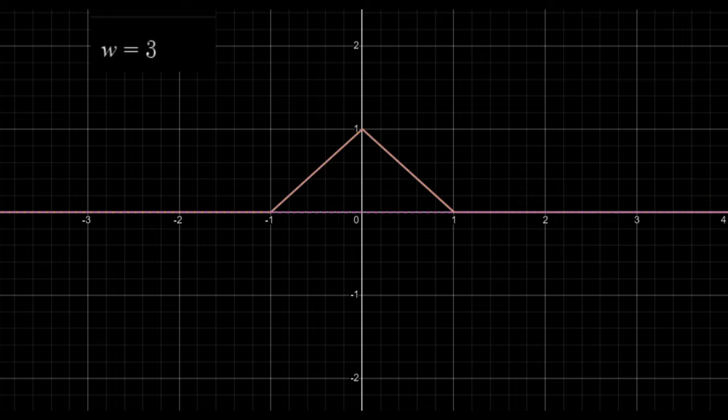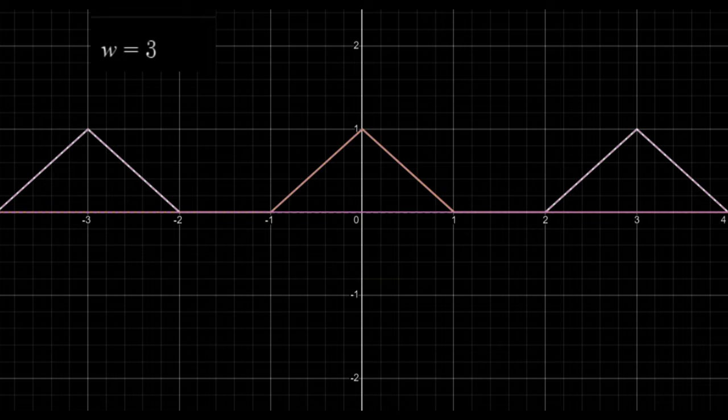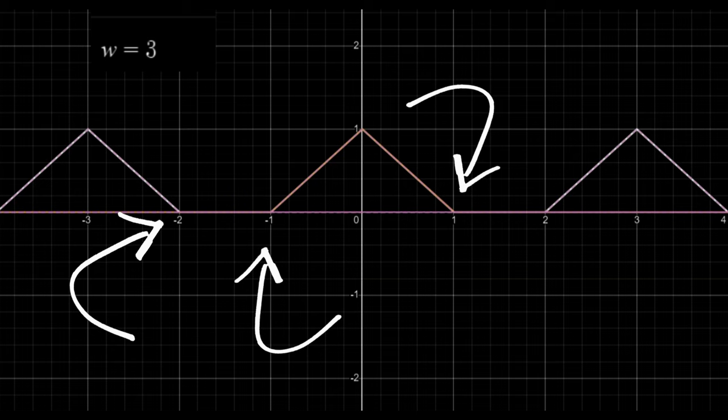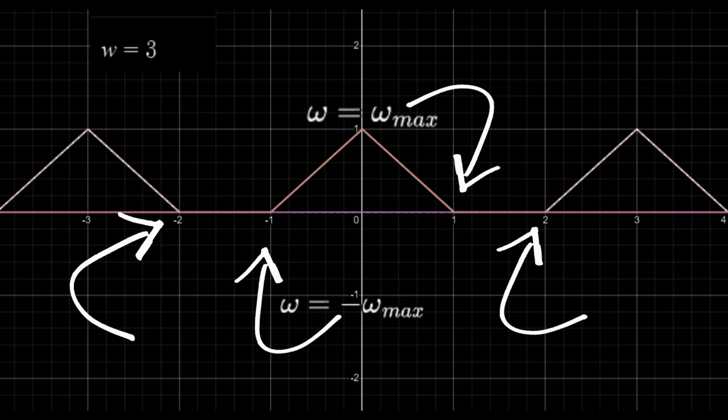For the clones to separate, we need the original copy to start after the clone to its left ends, and for it to end before the clone to its right starts. The original copy is centered at omega equals zero, and so it ends at omega equals omega max.